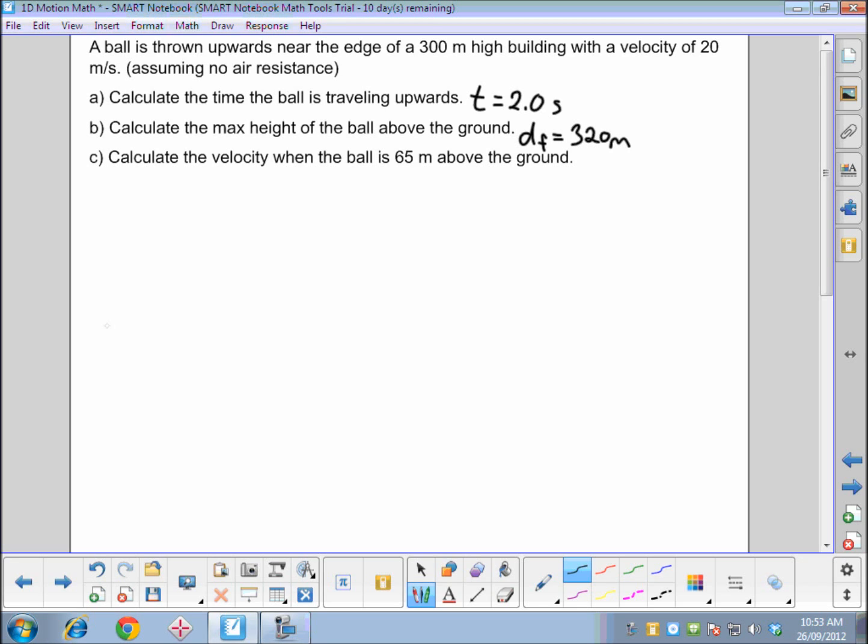For A, we calculated the time the ball is traveling upwards is 2.0 seconds. For B, the maximum height above the ground, we calculated that to be 320. And now we're going to handle C. Just to note, we don't need any of the previous calculation information to do part C. We can calculate C with everything that we're given in the problem.